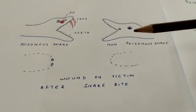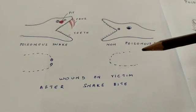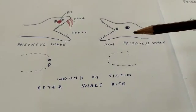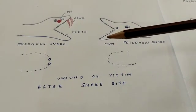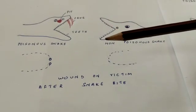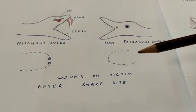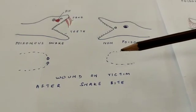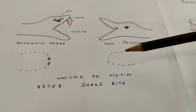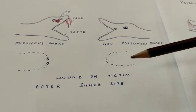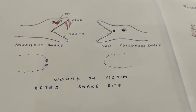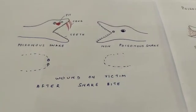In a non-venomous or non-poisonous snake, venom is not produced. No fangs are present, and small teeth are present on both jaws. When these non-poisonous snakes bite, you find only an elliptical-shaped wound consisting of minor pinpricks. So just by looking at the wound, we can say whether the victim has been bitten by a poisonous or a non-poisonous snake.